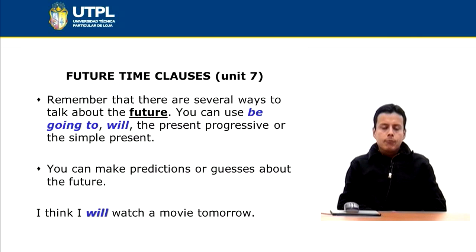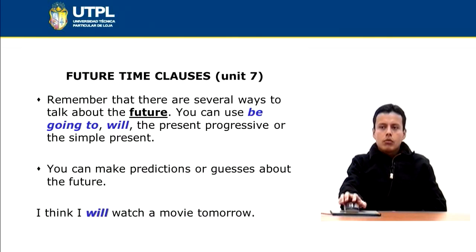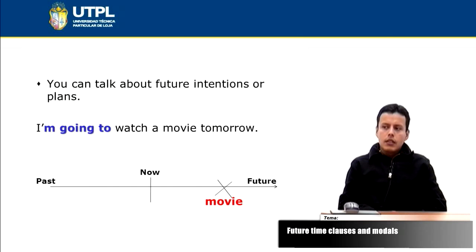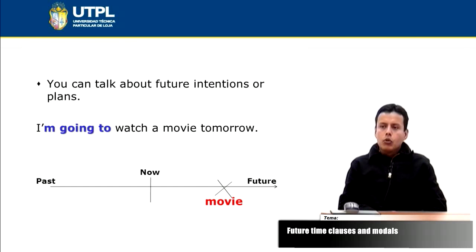When you use will, you can use will to make predictions or guesses about the future. For example, 'I think I will watch a movie tomorrow.' When you use going to, you can use going to to talk about future intentions or plans. For example, 'I'm going to watch a movie tomorrow.'